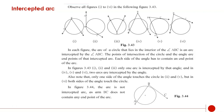But in figure 6, both sides of the angle touch the circle. In figure 3.44, the arc is not an intercepted arc. The reason is arm BC does not contain any end point of the arc. So if you have such a case, you are not going to call it an intercepted arc, because both arms of the angle have to touch the arc.